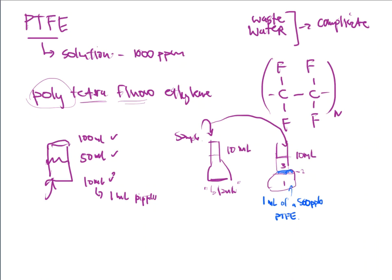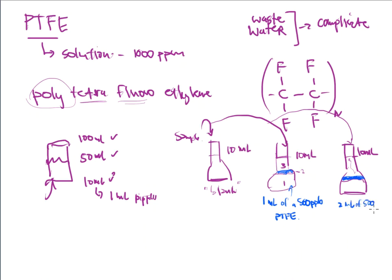I do it again because we need to make a set. I take another 10 mL flask, add more sample — not all the way to the top — and then add a little bit more PTFE than before. Then I fill it to the line. For this one, I added two milliliters of a 500 ppb PTFE solution.